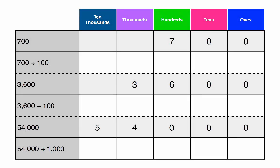Now we are going to divide by numbers that are bigger than 10, but still multiples of 10. Let's start with the first problem: 700 divided by 100. How many zeros does 100 have? 2. Exactly! Go ahead and cross out your 2 zeros in 100 and the 2 zeros in 700. How many place values do you think the 7 will have to move from the 100s? 2 place values. The 7 moves from the 100s to the 1s, making our answer 7.